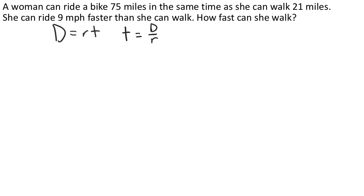The other thing we should do off the bat is make up a variable to represent our answer. If we want to know how fast she can walk, then let's say x could be her walk speed.